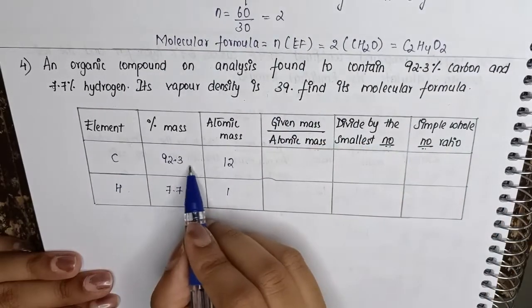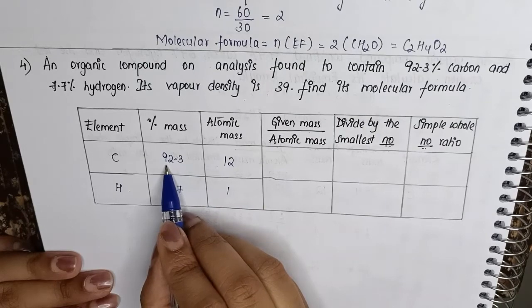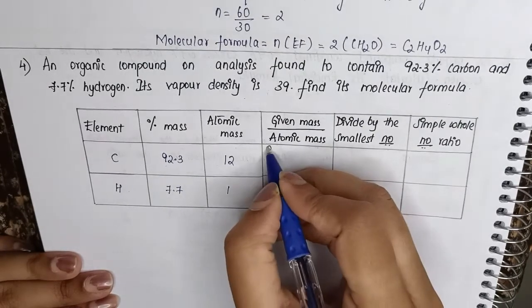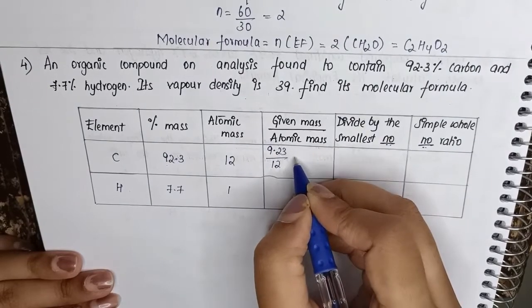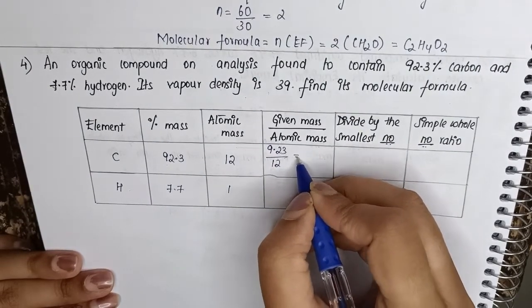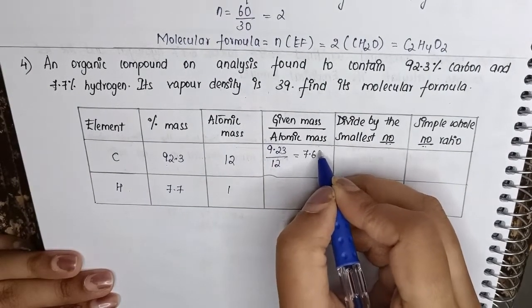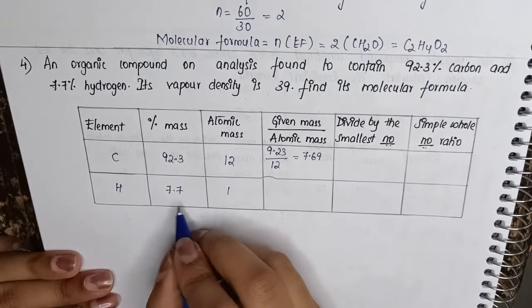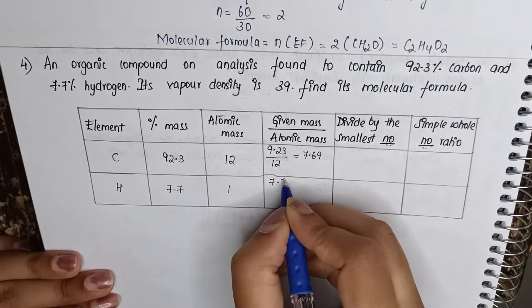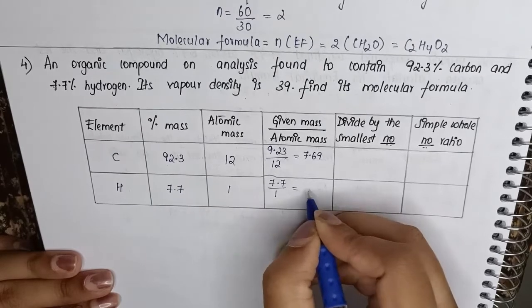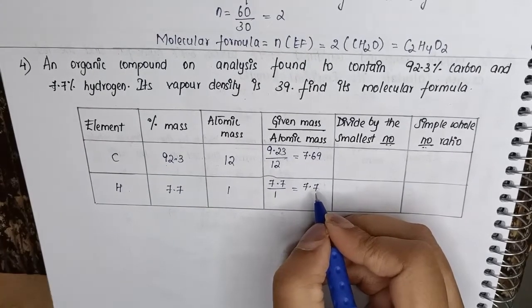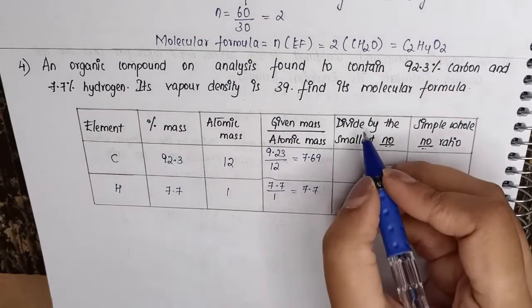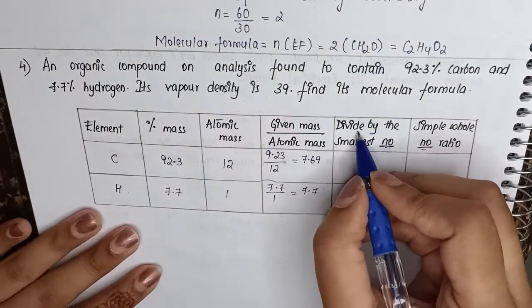Now in the fourth column we need to find out the number of moles. So we have to divide the given mass by atomic mass. So 9.23 divided by atomic mass of carbon which is 12, when we calculate this we will get 7.69. Similarly for hydrogen, 7.7 divided by 1, number of moles is 7.7.